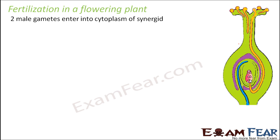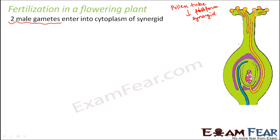Two male gametes enter into the cytoplasm of the synergid. The pollen tube enters into the synergid through the filiform apparatus, so the filiform apparatus helps in the entry of the pollen tube. When the pollen tube enters, inside it there are two male gametes, and these two male gametes are then released into the cytoplasm of the synergid. This one cell here is the synergid, and the two male gametes are released inside it.